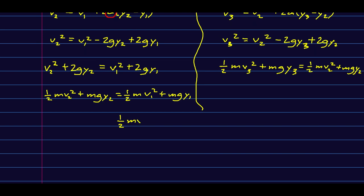A half Mv squared plus MgY. And whether I put ones, twos, or threes on the v's and y's. With twos, it equals the same expression with ones. And with threes, it equals the same expression as twos. And that's the same as that. And so this all equals this.